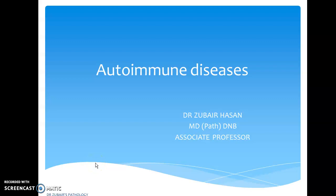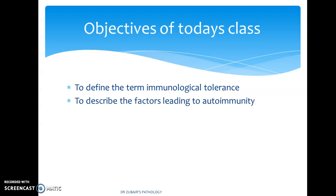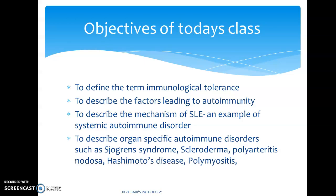In today's lecture, we'll be discussing autoimmune diseases. Our objectives for today's class are to define the term immunological tolerance, to describe the factors leading to autoimmunity, to describe the mechanism of systemic lupus erythematosus as an example of systemic autoimmune disorder, and to describe organ-specific autoimmune disorders such as Sjögren's syndrome, scleroderma, polyarthritis nodosa, Hashimoto's disease, and dermatomyositis.